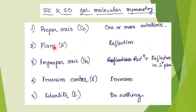The second symmetry element is the plane of symmetry, indicated by sigma (σ). The operation performed on this symmetry element is reflection. The imaginary plane present in the molecule is taken as the symmetry element, and the molecule is reflected with reference to that particular plane of symmetry.